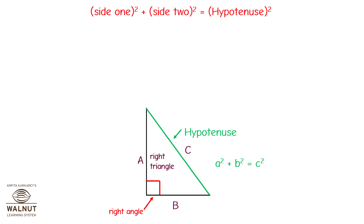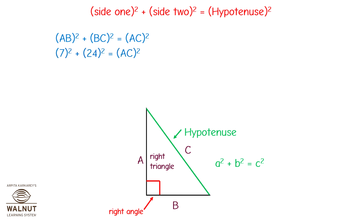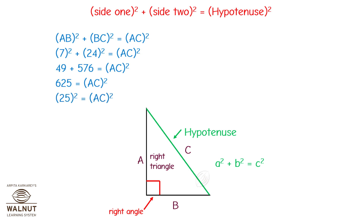Side 1 squared plus side 2 squared equals hypotenuse squared. AB squared plus BC squared equals AC squared. Therefore, 7 squared plus 24 squared equals AC squared. 49 plus 576 equals AC squared. 625 equals AC squared. 25 squared equals AC squared. Therefore, 25 equals AC.